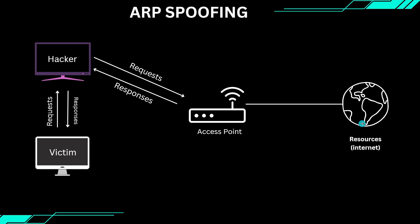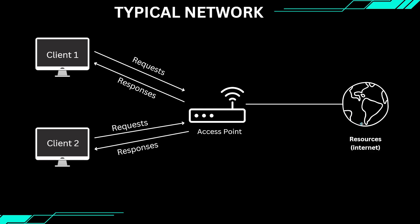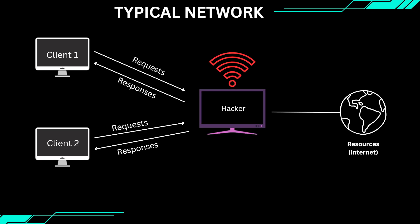Let's start by reviewing something basic. Remember the diagram we discussed earlier when we were learning about how networks work. The access point or the router is the only device with direct access to the internet. Clients, like your phone or laptop, send requests to this access point, which then forwards those requests to the internet, retrieves the responses, and sends them back to the clients. But what if we as hackers replace this access point with our own computer? What if we create a fake Wi-Fi network that provides real internet access? When people connect to our network, we automatically become the man in the middle because we are now acting as their router.